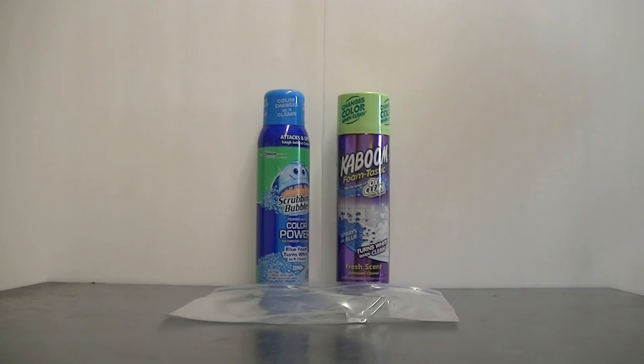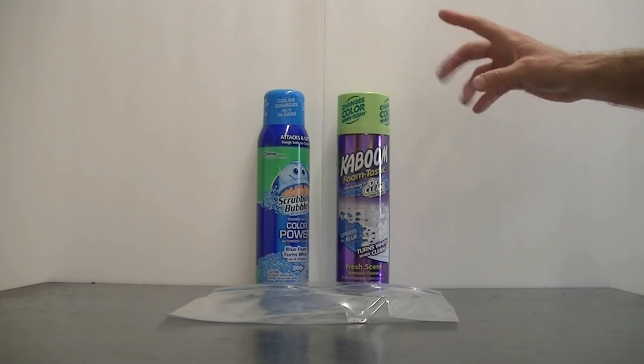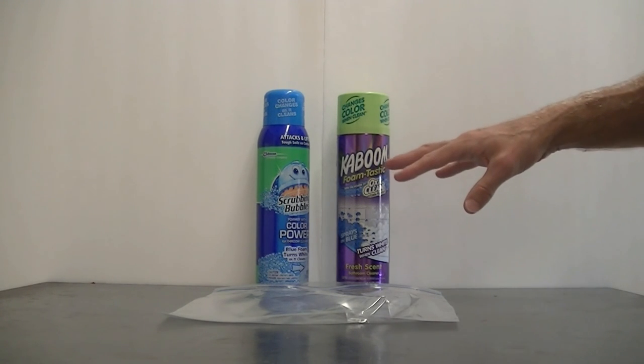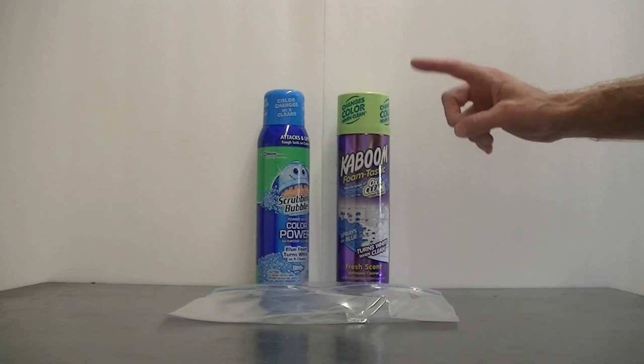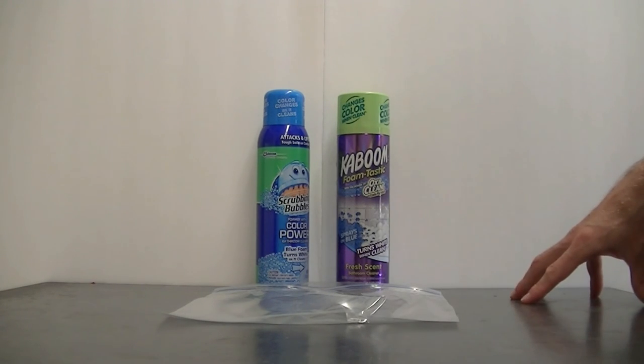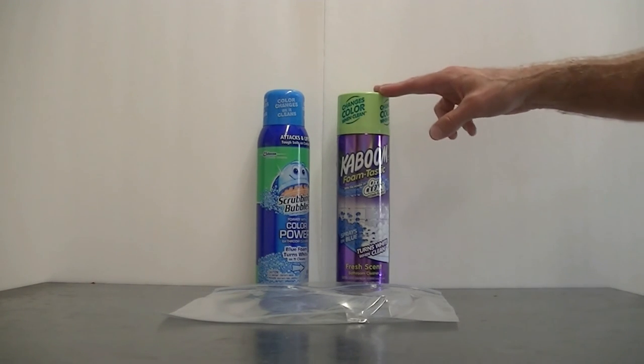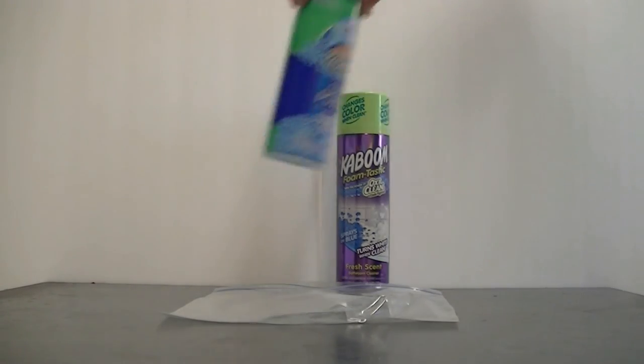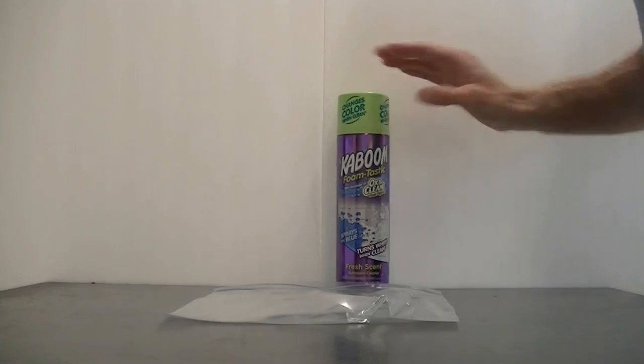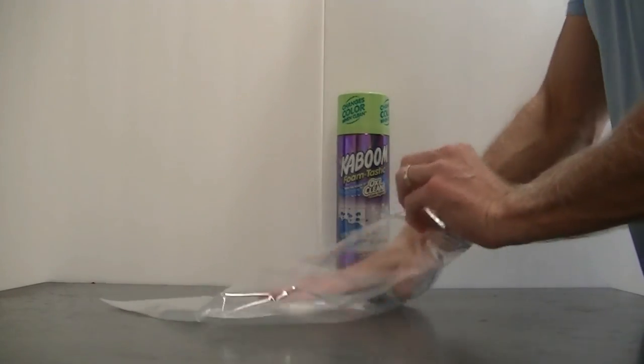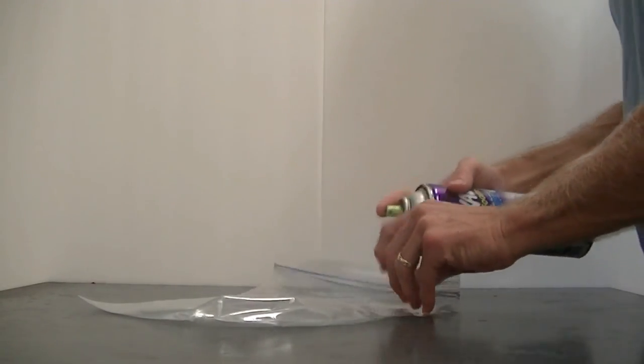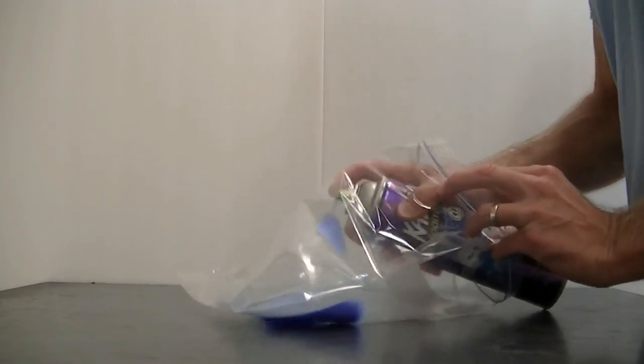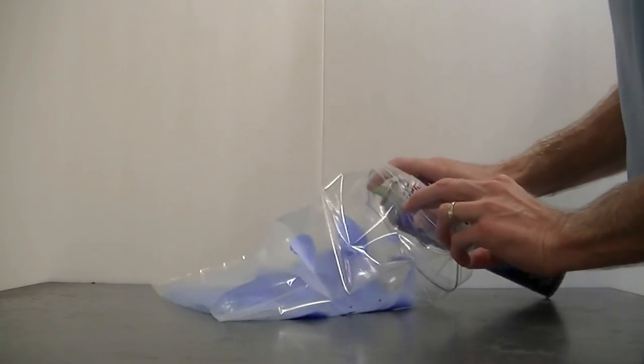So we've established that carbon dioxide in the atmosphere, when it interacts with these cleaners, it changes something in the cleaner from a blue color to a white color. Well, what is it in the cleaner that undergoes this blue to white color change? To sort of maybe figure this out, I'm going to take some of this cleaner here, and I'm going to spray it into the bag. And I'm spraying it into the bag to keep it protected from the air so we can keep that nice blue color.